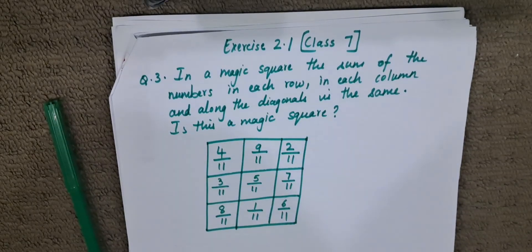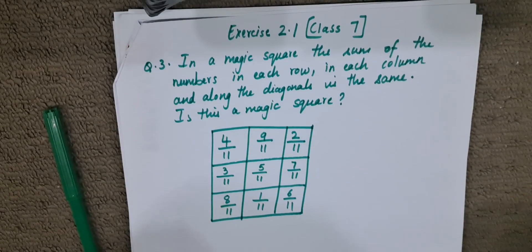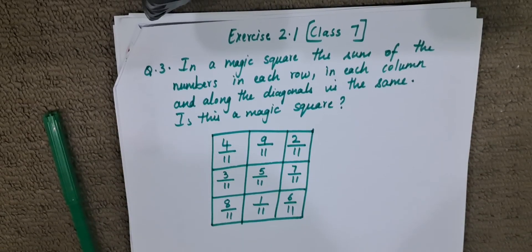See here, they have given us a square with 3 rows and 3 columns. Now they are asking us if it is a magic square.